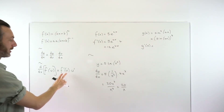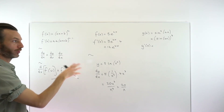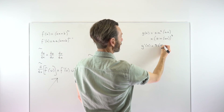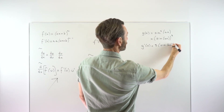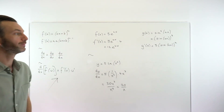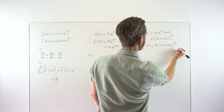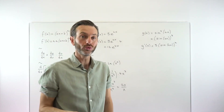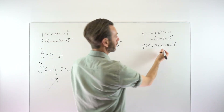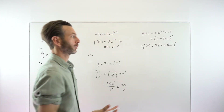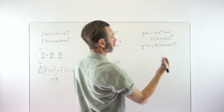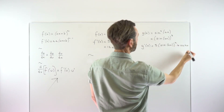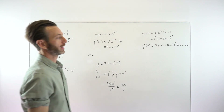Differentiating the external function: bring the 3 in front, leave the bracket alone, reduce the power by one — effectively just the power rule. Now we multiply by the derivative of the inside. The derivative of sine(4x) is again the chain rule — we saw this earlier and it differentiates to 4cos(4x). So we're essentially using the chain rule twice here.